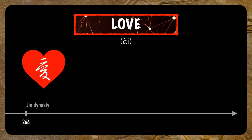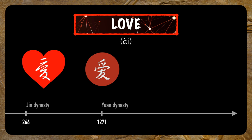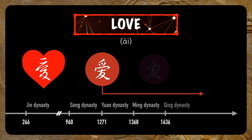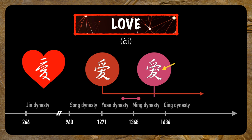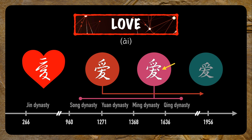And the character everybody likes to pick fault with — 爱 (love). The simplified character for love can be traced as far back as the Jin Dynasty when it looked like this in cursive script. By the time of the Yuan Dynasty, a version of this character had already appeared that looked exactly like the modern version. But during the Song, Ming, and Qing Dynasties, an extra dot appeared in this character, which decided to disappear once again in the 20th century.